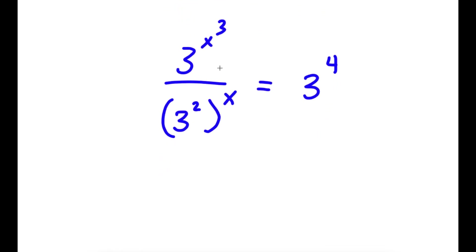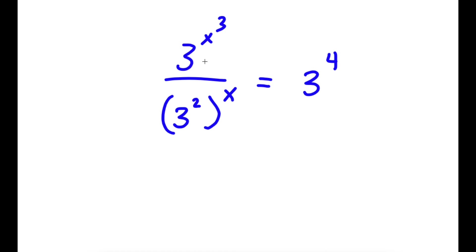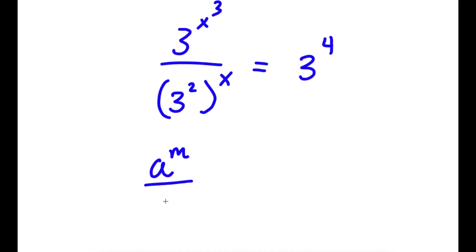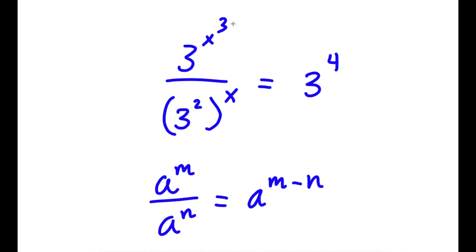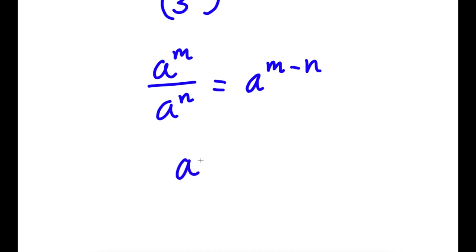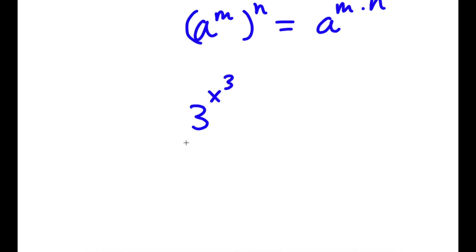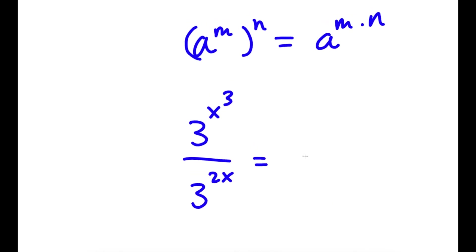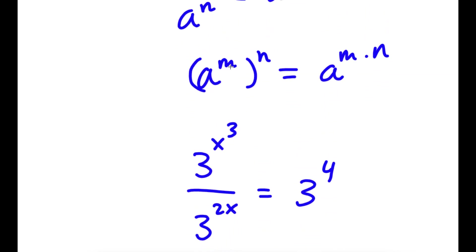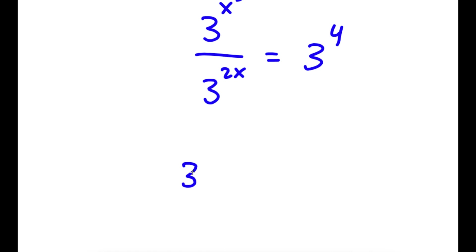If I have a to the power of m over a to the power of n, this equals a to the power of m minus n. I have 3 to the power of x³ divided by 3 squared to the power of x. Now 3 squared to the power of x — since (a^m)^n = a^(m·n) — equals 3 to the power of 2x. So using the quotient rule, I get 3 to the power of x³ minus 2x, which is equal to 3 to the power of 4.